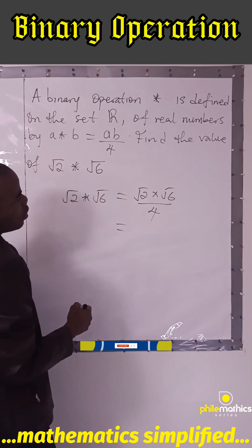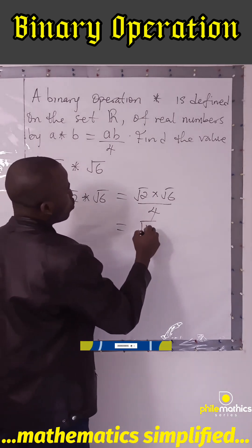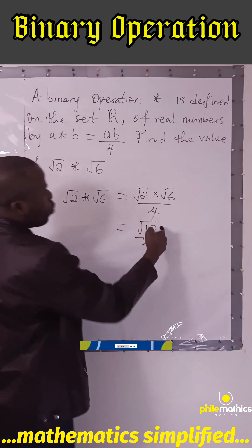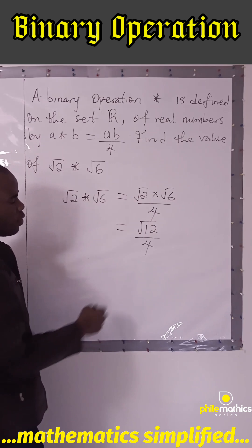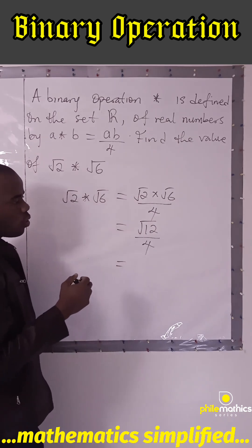We can reduce root 12 to its simplest form as root 4 times root 3.